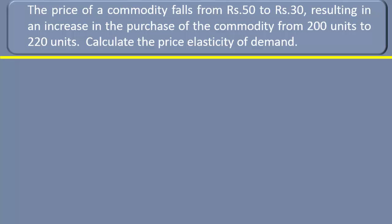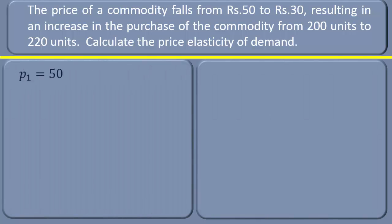First of all, state what is given in the problem. Initial price: 50 rupees. New price: 30 rupees. Change in price equals initial price minus new price. Change in price numerically: 50 minus 30 equals 20. Initial quantity: 200. New quantity: 220 units.